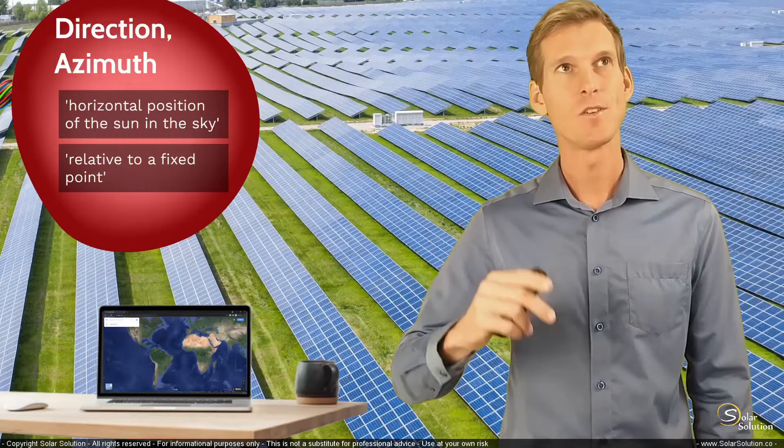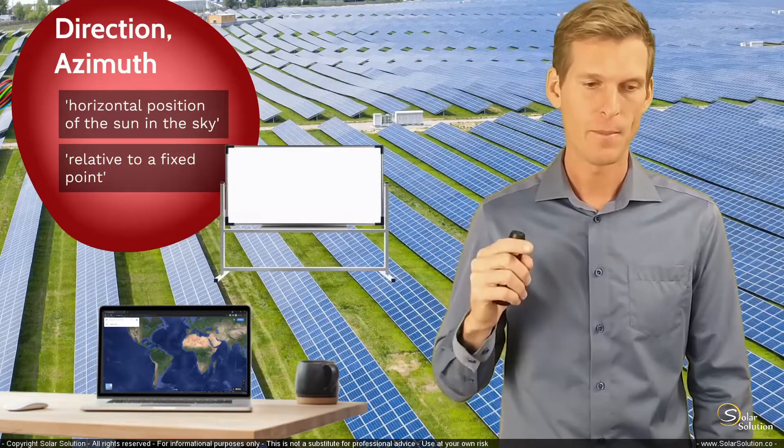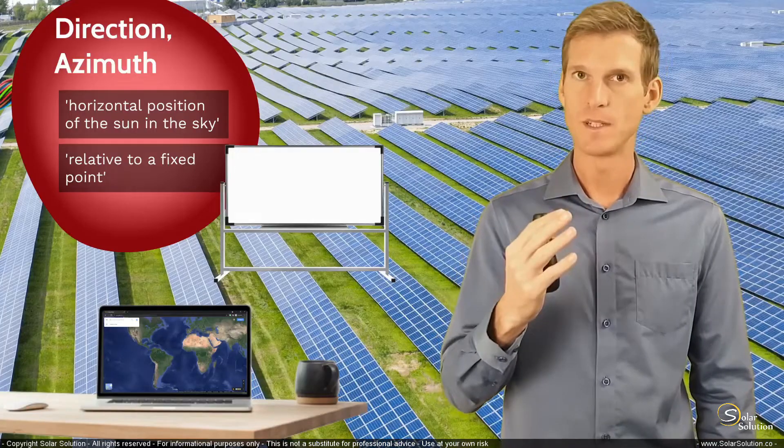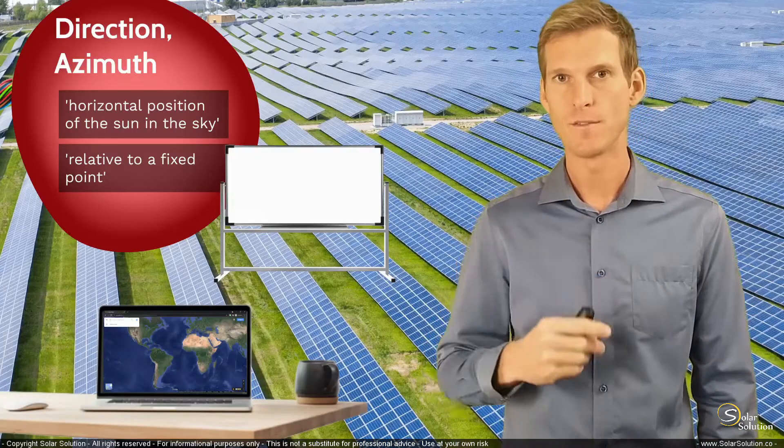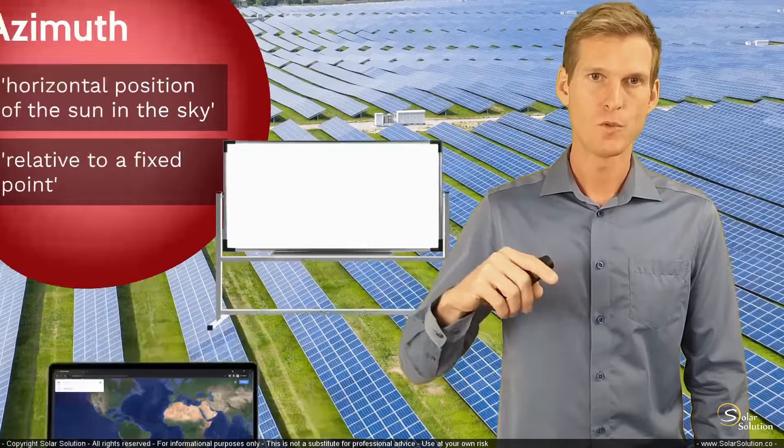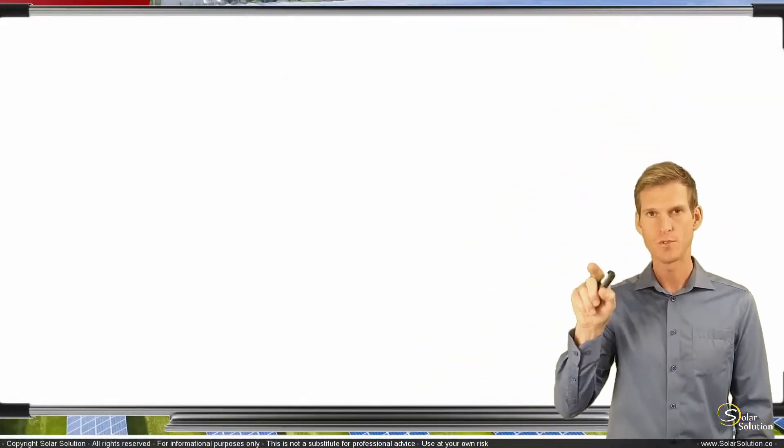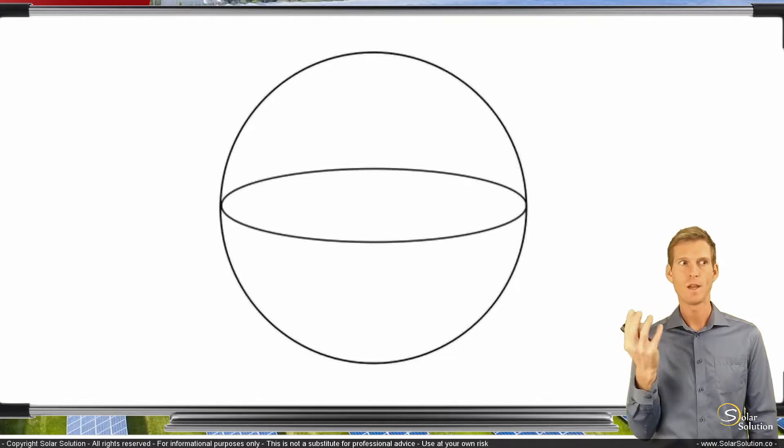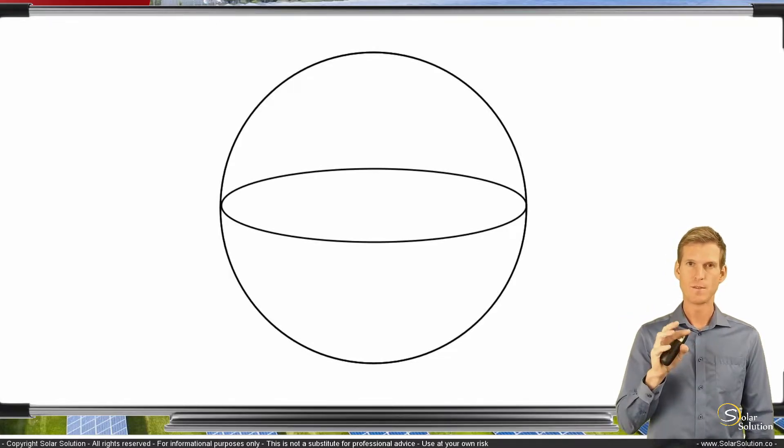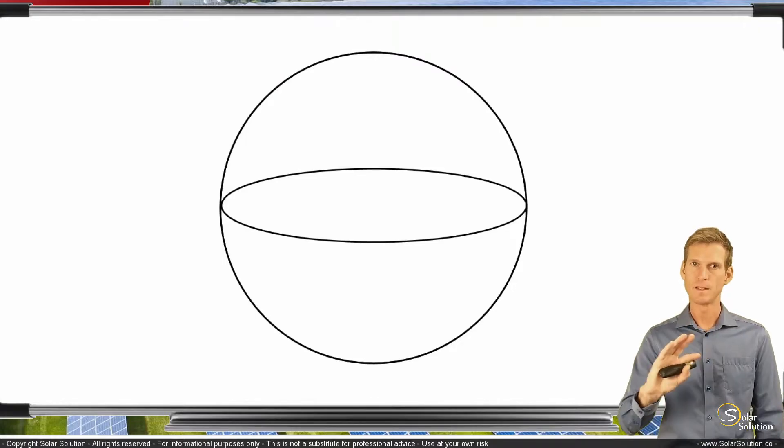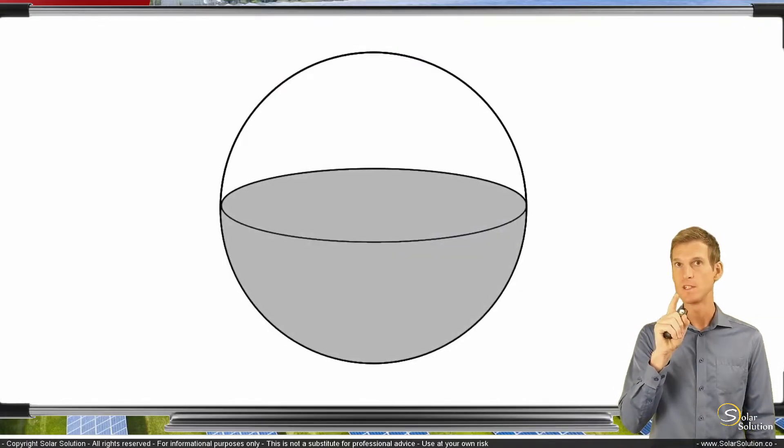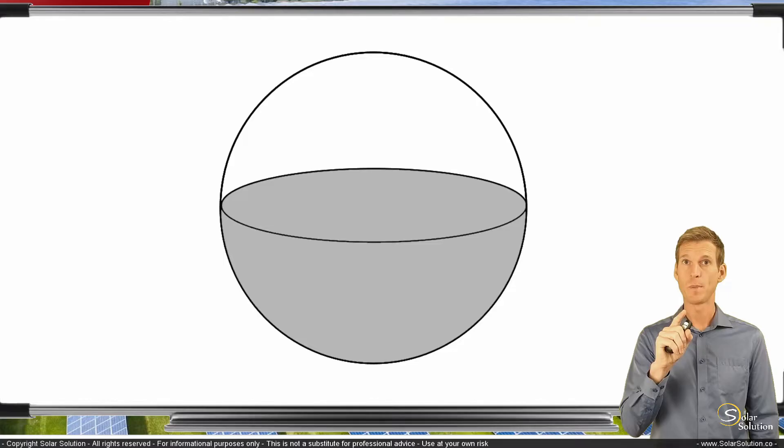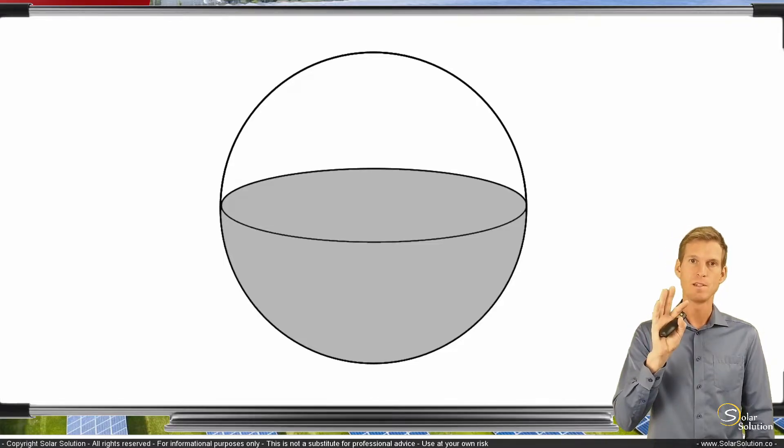But those are only words, so let's go to the whiteboard and let me explain this in a visual and graphic way. So let's draw a circle, a simple circle, and let's turn the circle into a sphere, into a ball, into a round object. And let's give it a bit of volume, so the bottom half we paint it gray.